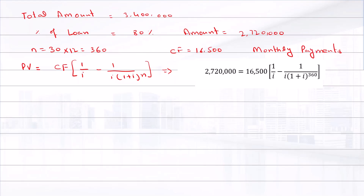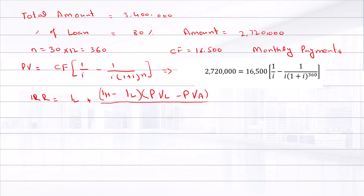Unfortunately, this equation cannot be solved for the interest rate using algebra. However, we can use the IRR interpolation formula to calculate the APR. The IRR formula is: i_L plus (i_H minus i_L) times (PV_L minus PV_actual) divided by (PV_L minus PV_H), where i_L is the lower interest rate, i_H is the higher interest rate, PV_L is the present value at the lower interest rate, and PV_actual is the actual present value.